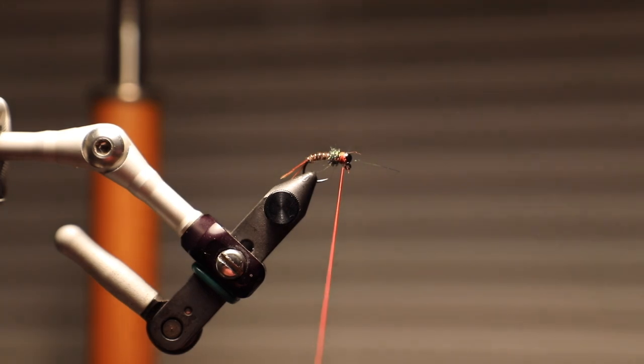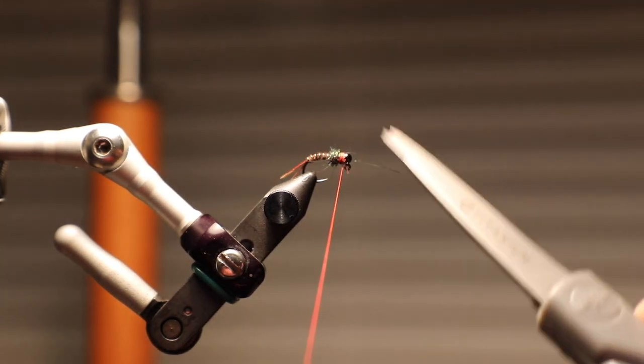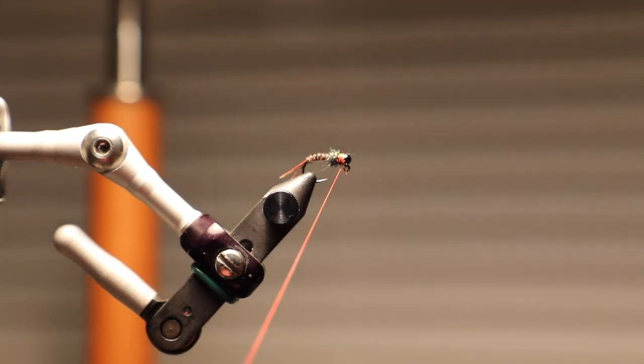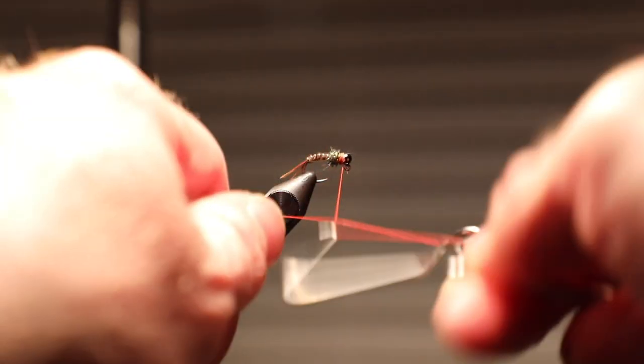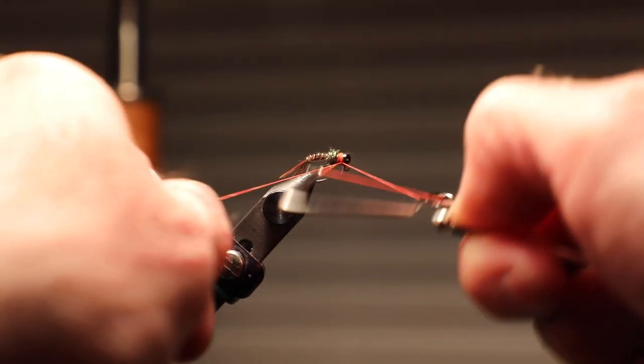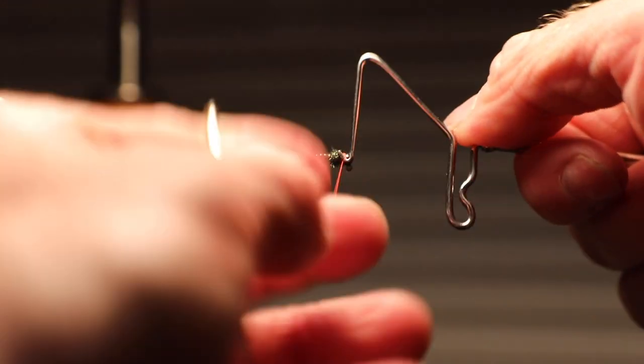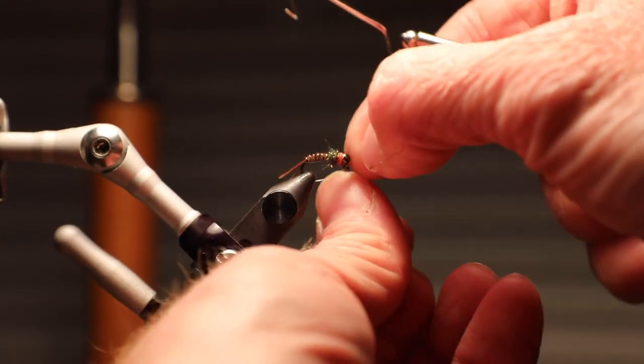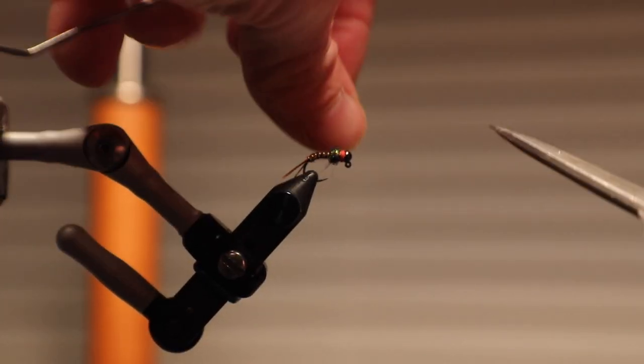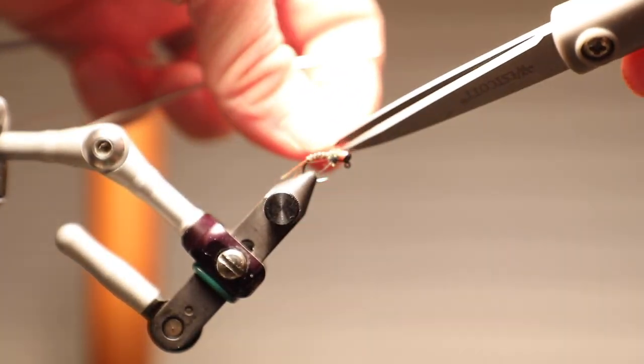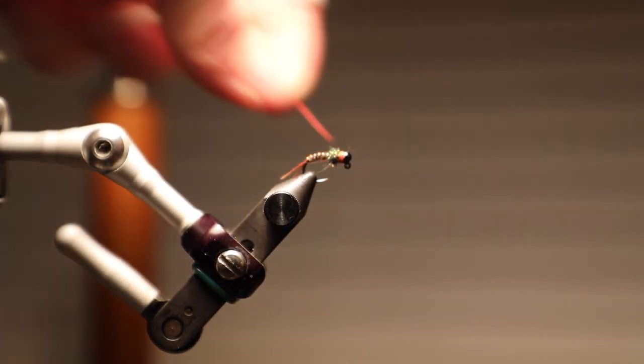This is one of those unusual variations on a fly that when it works, you're going to think that you've literally cracked the code and you're always going to catch a ton of fish when it works. The funny thing is there's days that this is the best thing you could do. And there's plenty of days where this isn't going to catch any fish, but just a natural pheasant tail will catch all the fish in the world.